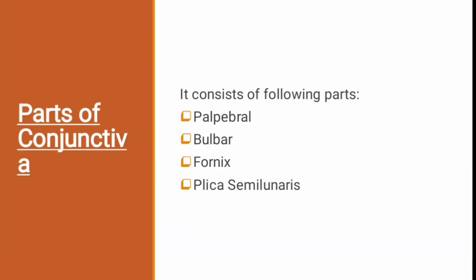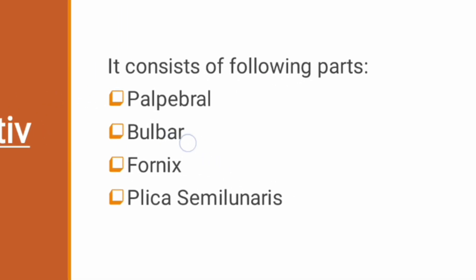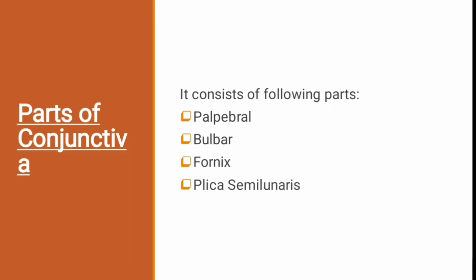There are different parts of the conjunctiva. There is conjunctiva on the white surface of the sclera, and there is conjunctiva present under the eyelid. On the basis of its presence in different structures, we differentiate the parts as: palpebral conjunctiva, bulbar conjunctiva, fornix, and plica semilunaris.